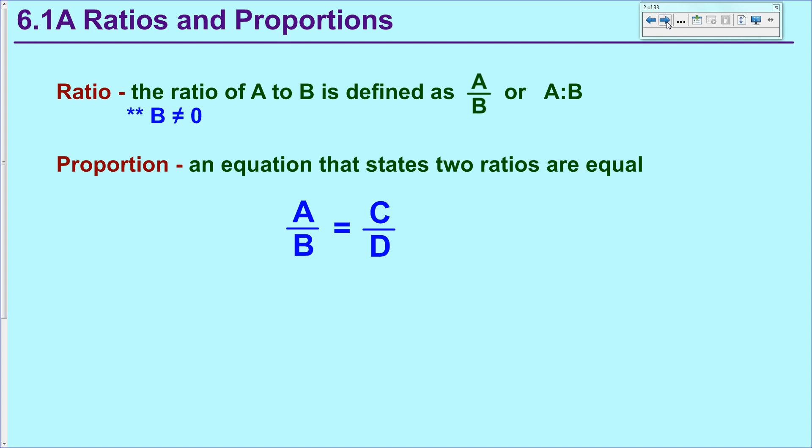A ratio in this book is defined to be two numbers where one is being divided by the other or in colon notation where it is A to B or A:B. You say both the same way. The only stipulation here is that B cannot be zero. And when it is written A to B, A is on top or A comes first.